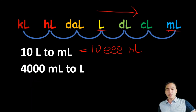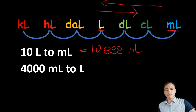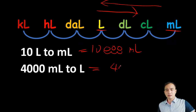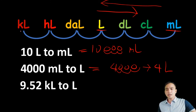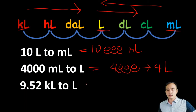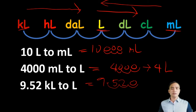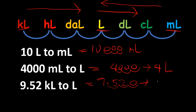Next: 4,000 mL to liters. That is going to the left, three places. We move the decimal point three places to the left, giving 4 liters. Next: 9.52 kilolitres to liters — that is three decimal places going to the right. We move the decimal point three places to the right and put zeros to fill empty spaces. The final answer is 9,520 liters.